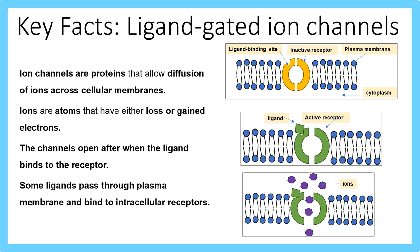Ions are atoms that have either lost or gained electrons. If it's a metal, it forms a positive ion; if it's a non-metal, it forms a negative ion. The channels open when the ligand binds to the receptor. Some ligands are able to pass through the plasma membrane and bind to intracellular receptors. In the first image, you can see an inactive receptor with a ligand binding site, the plasma membrane, and the cytoplasm. In the second image, when the ligand binds and activates the receptor, it opens the ion channel door to allow flow of ions to enter.